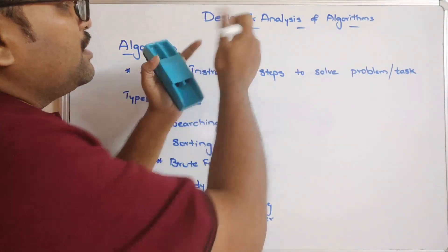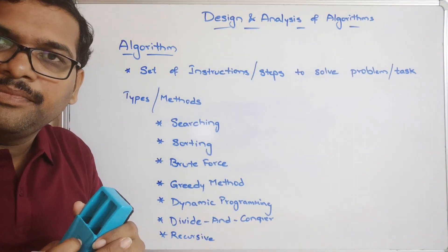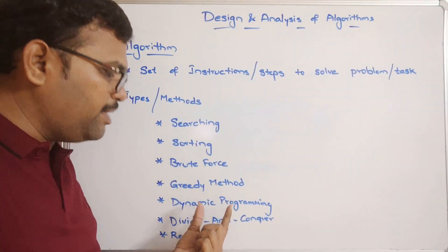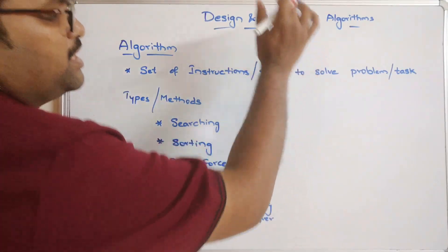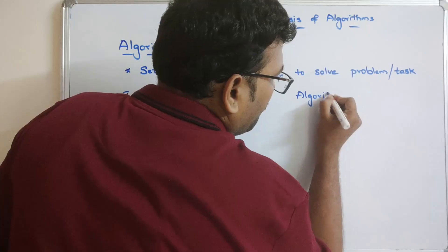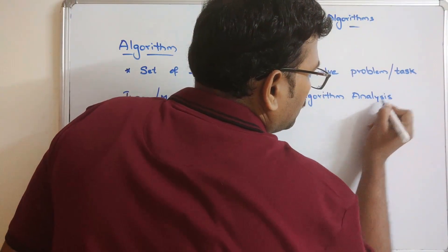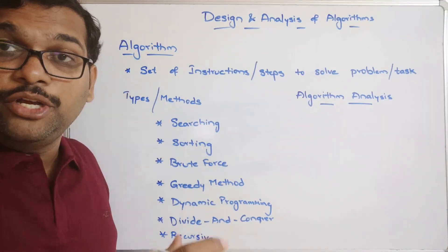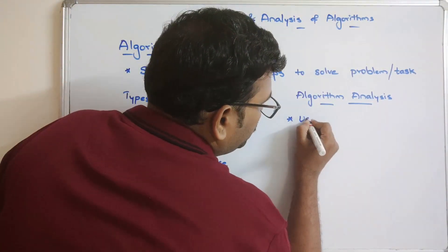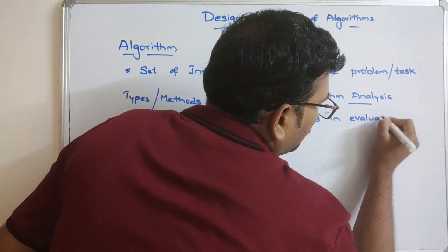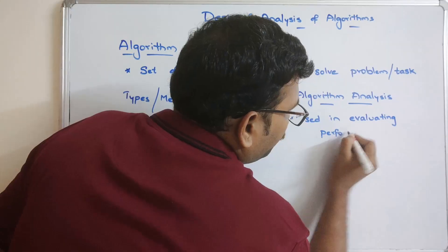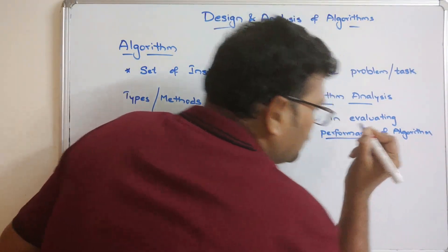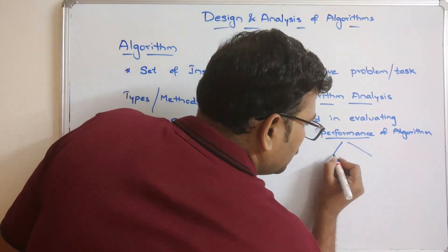The first part of this subject is designing the algorithm — which methodology we are going to use to solve the problem, whether brute force, dynamic programming, divide and conquer, greedy method, etc. The next part is algorithm analysis. Algorithm analysis is used to evaluate the performance of the algorithm.